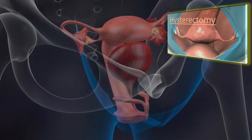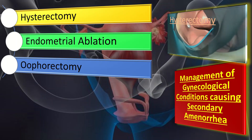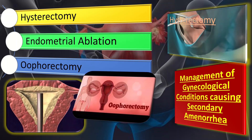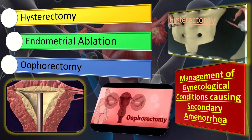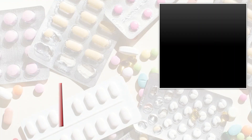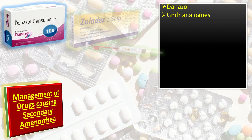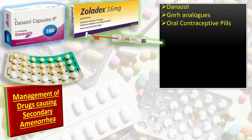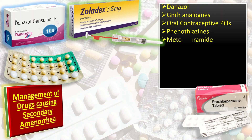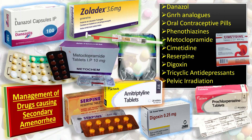Let us discuss the management of gynecological conditions causing secondary amenorrhea. When secondary amenorrhea is due to gynecological conditions like hysterectomy, endometrial ablation, and oophorectomy, we need to do appropriate patient counseling, reassurance, and symptomatic management. Regarding drugs responsible for causing secondary amenorrhea — including danazole, GnRH analogues like goserelin, oral contraceptive pills, phenothiazines like prochlorperazine, metoclopramide, cimetidine, reserpine, digoxin, tricyclic antidepressants, and pelvic radiation — we will advise the patient to consider stopping these drugs if their intake is not absolutely necessary.